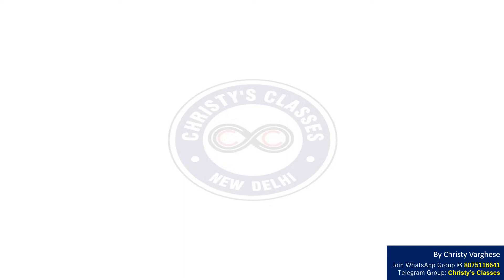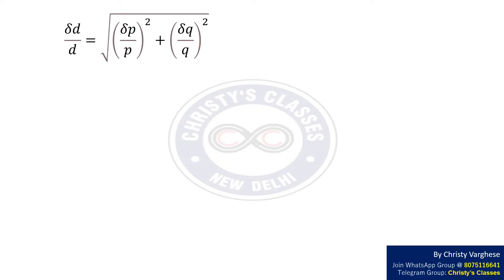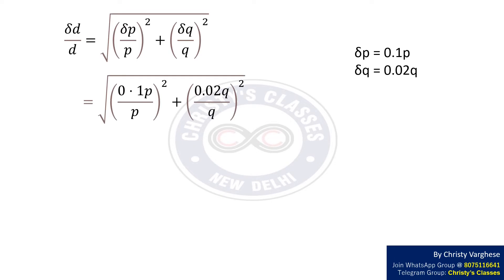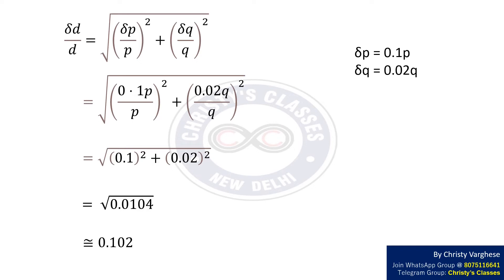Here, we have to find the percentage random error in P by Q. For that, we will use the equation: delta D by D equal to the square root of (delta P by P) squared plus (delta Q by Q) squared. Substituting the values, delta D by D is equal to the square root of (0.1P by P) squared plus (0.02Q by Q) squared, which equals the square root of 0.0104, which is approximately equal to 0.102.